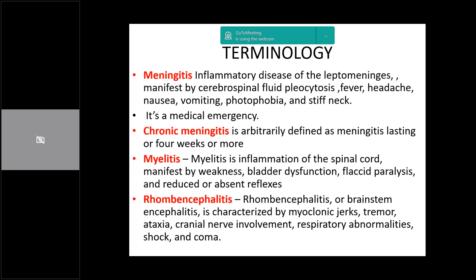If there is concomitant inflammation of the spinal cord, this is referred to as myelitis. Depending upon what part of the spinal cord is involved, there will be corresponding manifestations — involvement of distal signs, upper motor neuron signs, flaccid paralysis, weakness, and bladder dysfunction, depending upon whether it's a lower motor neuron or upper motor neuron lesion.